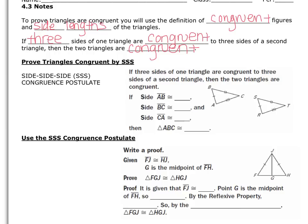Let's see SSS in action. Side AB is congruent to side SR, side BC is congruent to side ST, and side CA is congruent to side TR. Therefore, with three pairs of congruent sides, we can say triangle ABC is congruent to triangle RST. When writing the congruency statement, make sure your vertices are lined up. This also tells us that angle A is congruent to angle R, B to S, and C to T.